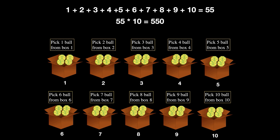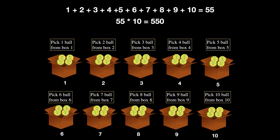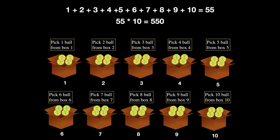550 grams is not possible because one box has defective balls weighing 9 grams each. If box one has defective balls, the total weight should be one gram less than expected. If box two has defective balls, the total weight should be two grams less. Similarly, if box three has defective balls, the total weight should be three grams less. So once you weigh the set of chosen balls, find the difference between the total weight and the expected weight — that number represents the box with the defective balls.